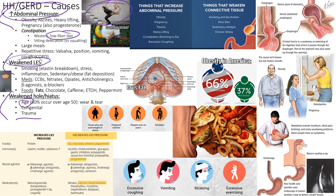A low-fiber diet increases pressure inside the GI lumen and raises constipation risk. Obesity also independently weakens the LES — fat deposits around the muscular crux of the hiatal opening, making those muscles work less effectively. Heavy lifting, straining during defecation, and pregnancy are additional risk factors. Progesterone and estrogen in pregnancy both weaken the LES, so pregnant patients get hit on two fronts.